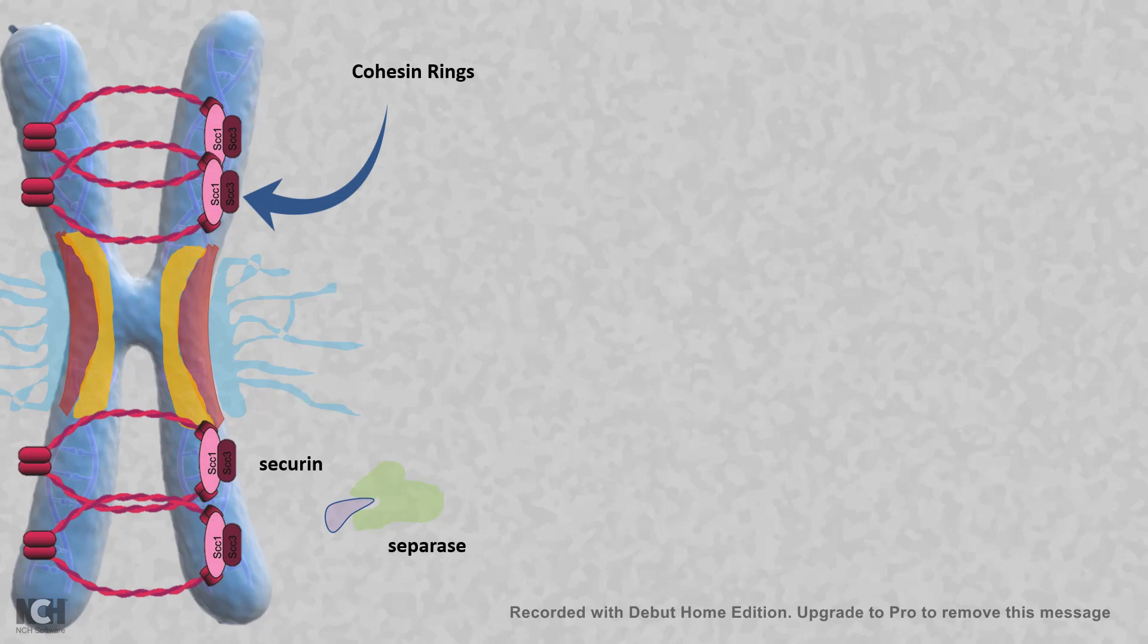Cohesin rings, as the name suggests, hold the chromatids in a cohesive fashion. But separase cannot work individually because it is already inhibited by securin.